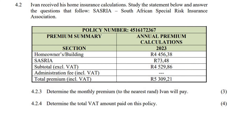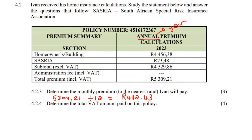Determine the monthly premium to the nearest rand that Ivan will pay. This is an annual premium — that means per year. So we just take that number, 5309.21, and divide it by the number of months in a year, which is 12. That gives 442.43 rand. They said round it to the nearest rand, so the answer is 442 rand.